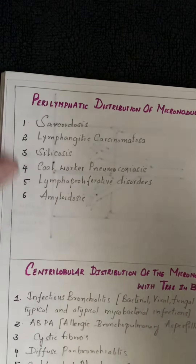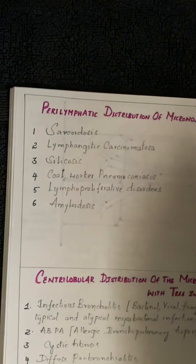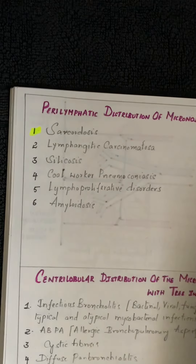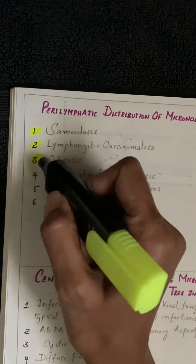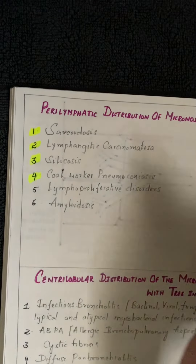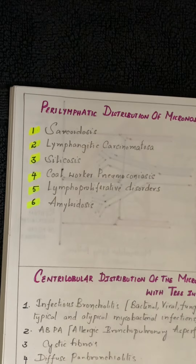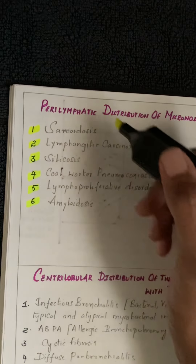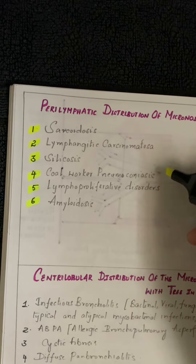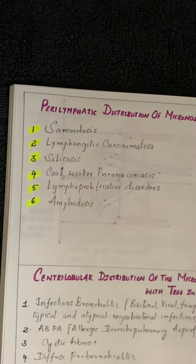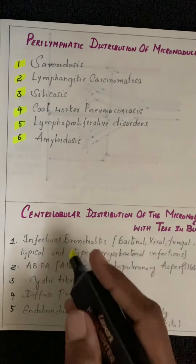Coming to differential diagnoses: for perilymphatic distribution, important differentials include sarcoidosis (most important), lymphangitic carcinomatosis, silicosis, coal workers' pneumoconiosis, lymphoproliferative disorders, and myelofibrosis.